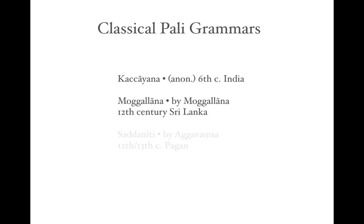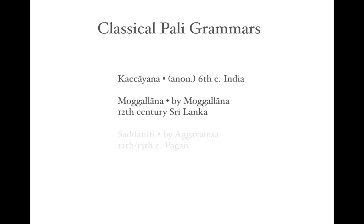Some scholars consider the Kaccayana and the Moggallana the two main classical grammars, since all other grammatical texts are based on them. We are of course talking about extant or surviving grammatical treatises — there were others before the Kaccayana but they have not survived. I am of the opinion that the Kaccayana and Moggallana are the two classical grammars; the Saddaniti is mostly based on the Kaccayana, with much improvement, but is still indebted to it.